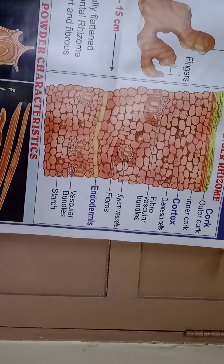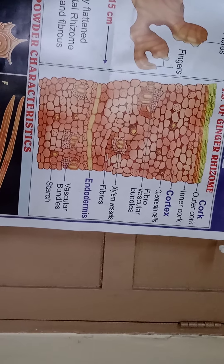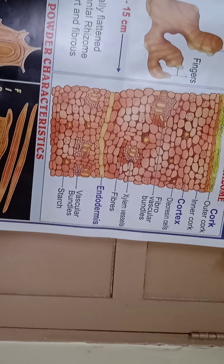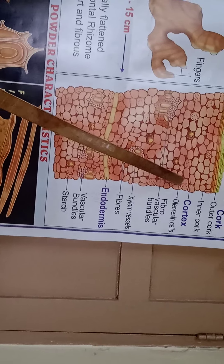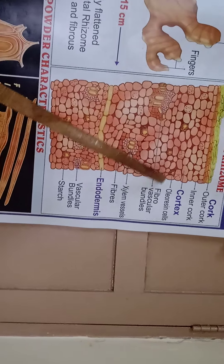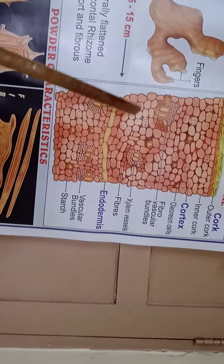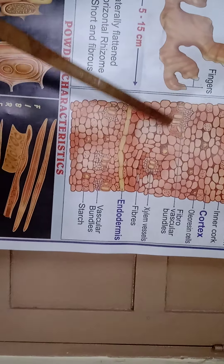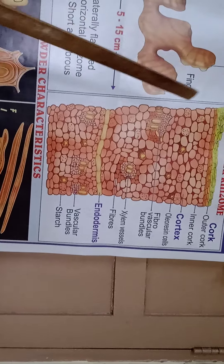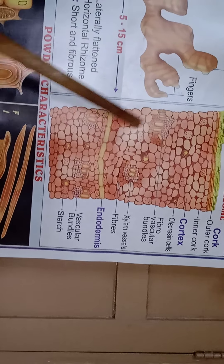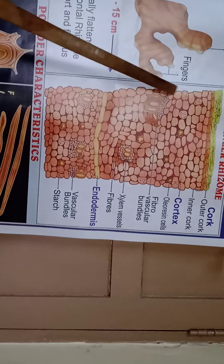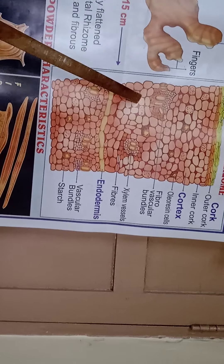Yellowish to reddish-brown oleoresin is present in the ginger — these are called oleoresin cells. Here you can see the yellow-reddish colored cells which are the oleoresin cells. Then fibrovascular bundles: the vascular bundle is collateral, conjoint, and closed. A group of sclerenchymatous fibers partially covers the vascular bundles of the cortex and ground tissue region.